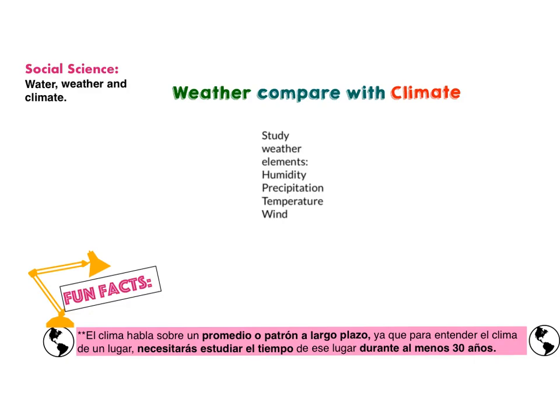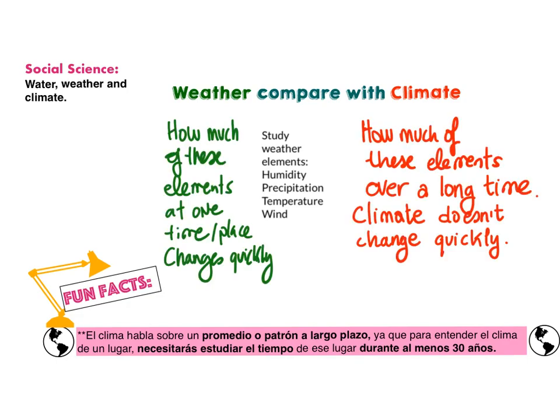When we study weather, we see how much of these elements — humidity, precipitation, temperature and wind — happen. The weather studies these elements at one time and at one place.